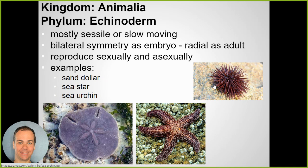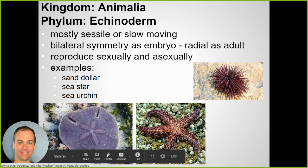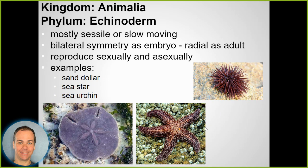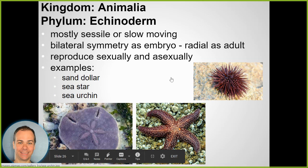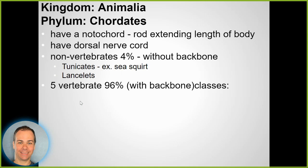Sea urchins, starfish, and sand dollars are animals called echinoderms. They produce spines that you can see. Most of them are filter feeders, getting energy by consuming things out of the water.